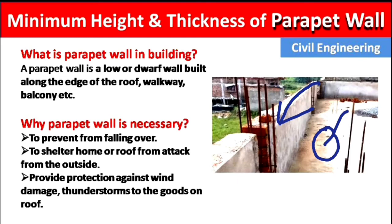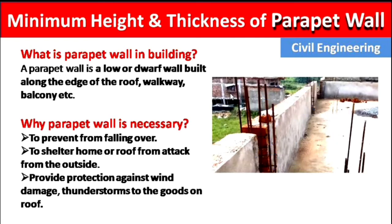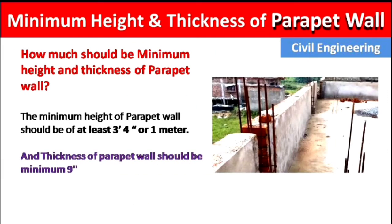For example, if a parapet wall is not present and we place a chair on the roof, then if the wind blows, it may blow the chair down off the roof. So to protect chairs, tables, and any other equipment, the parapet wall provides protection against wind damage and thunderstorms.